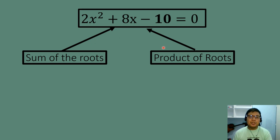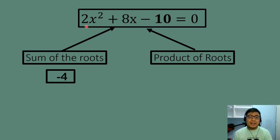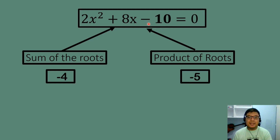Let's observe this quadratic equation. The sum of the roots is negative 4. Since A equals 2, which is not equal to 1, the coefficient of the linear term (8) is divided by 2, giving 4, and then the sign changes — that's how we get the sum of the roots as negative 4. Similarly for the product of the roots, negative 10 is divided by 2 giving negative 5. The sign did not change.